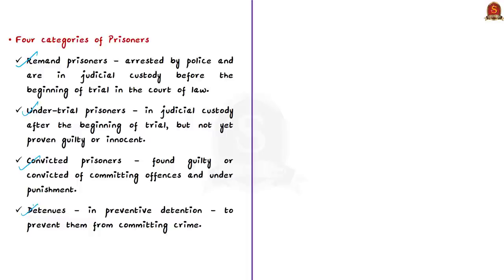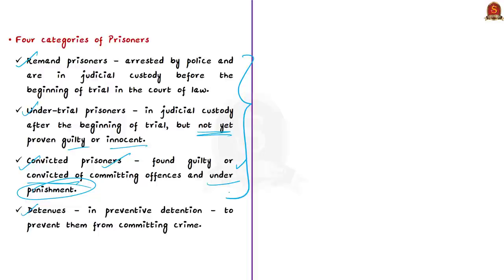Remand prisoners are those arrested by police and in judicial custody before the beginning of trial. Under-trial prisoners are in judicial custody after the beginning of trial but have not yet been proven guilty or innocent. Convicted prisoners are those found guilty and serving a sentence of punishment given by the court. Except for convicted prisoners, all others are not yet convicted, but Section 62 Clause 5 keeps all three categories on the same footing, while providing an exception for detainees under preventive detention.